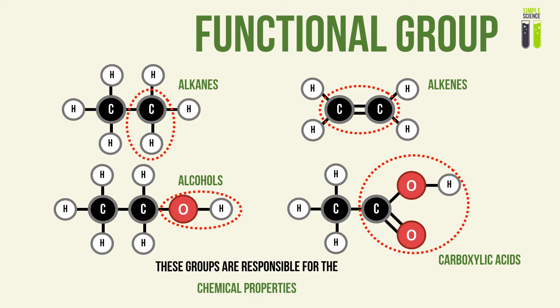A functional group is a group of atoms responsible for all chemical reactions in the members of a homologous series. In the alkanes, the CH group is responsible for all chemical reactions. In the alkenes, the carbon-carbon double bond is responsible. In the alcohols group, the OH bond connected to the carbon is responsible. And in carboxylic acids, the COOH group is responsible for all chemical reactions. These functional groups are what make each homologous series chemically distinct from the others.